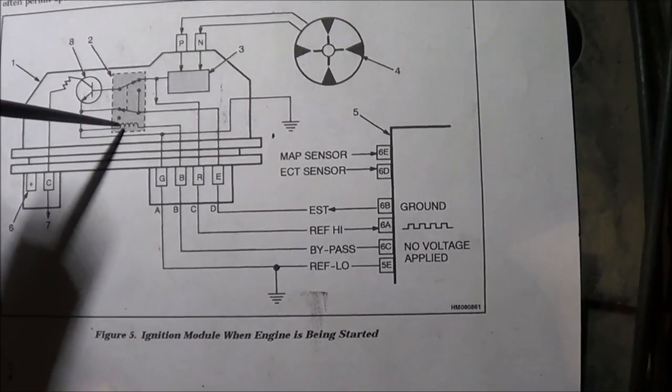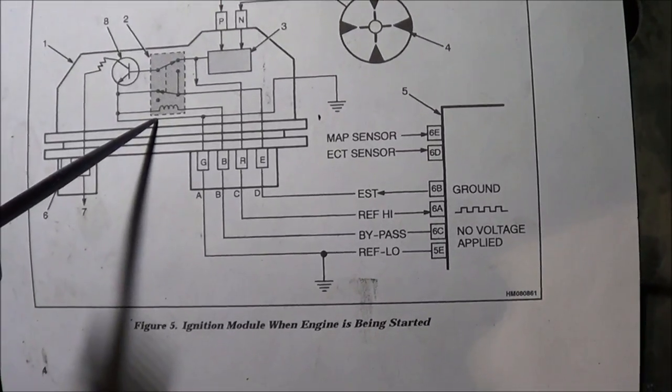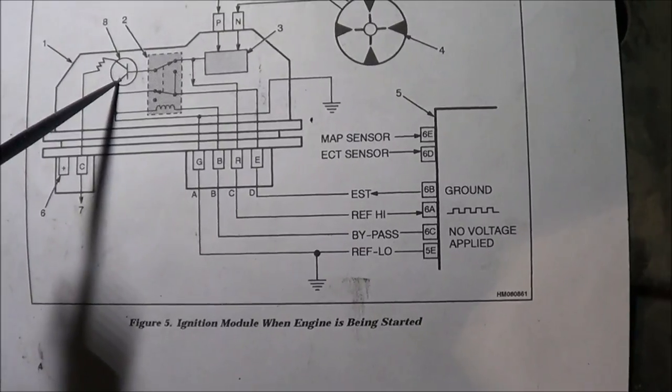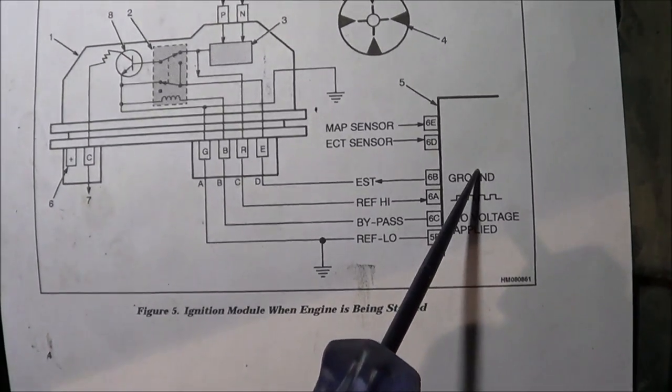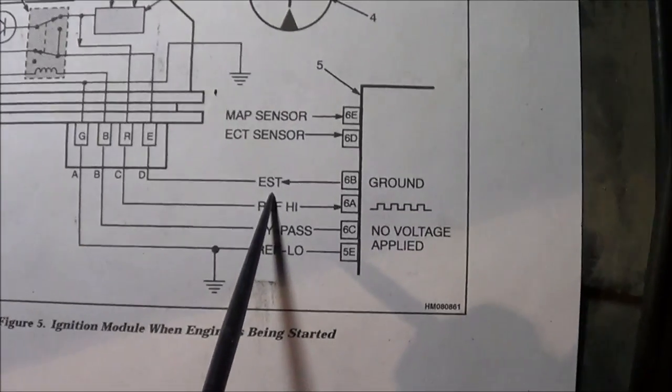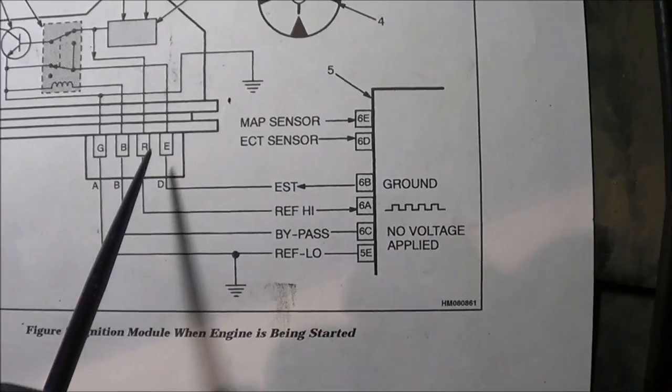Once the speed reaches 400 RPM, then the ECM sends a bypass signal to the ignition module, and it activates an electronic relay inside the ignition module which switches over control of that transistor directly to the ECM.